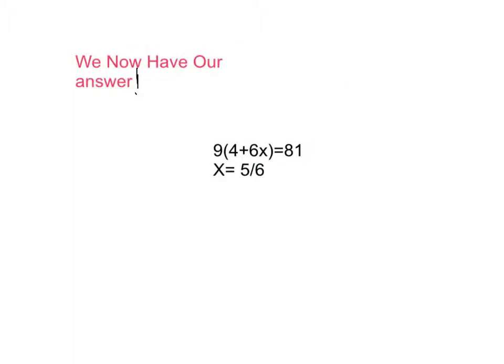We now have our answer. 9 times 4 plus 6x equals 81 was our equation. And we found, after doing all of our work, that the answer is 5 over 6. Now, before we walk away with the right answer, we must check that it's the right answer. So, we have to substitute 5 over 6 for x.